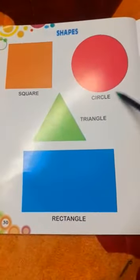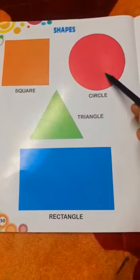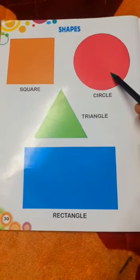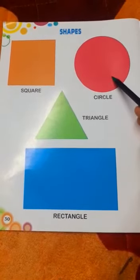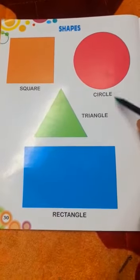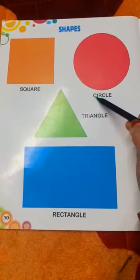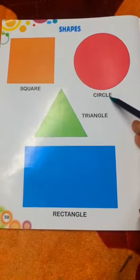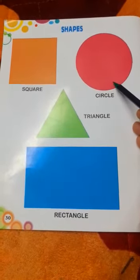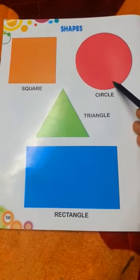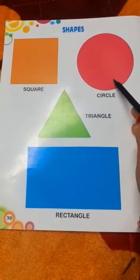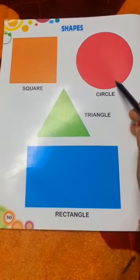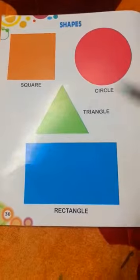Now, next step. This is a circle. Children, this is a circle. What is the spelling of circle? C-I-R-C-L-E, circle. It has no side. Now, next step.